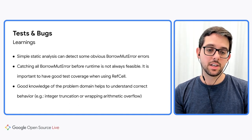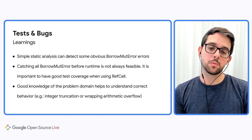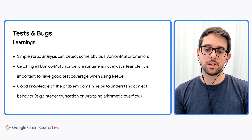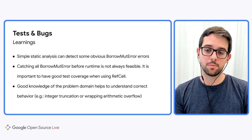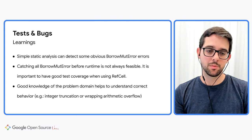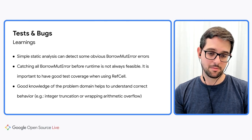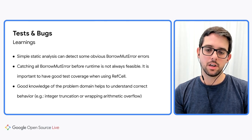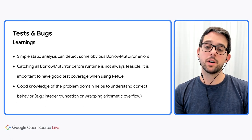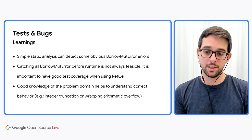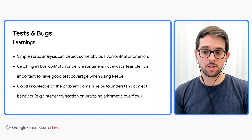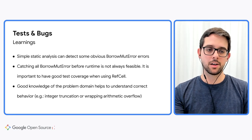Lastly, it should come as no surprise, but having good knowledge of the problem domain helps to understand what's the correct and expected behavior — for example, whether the code relies on integer truncation or wrapping arithmetic overflow.